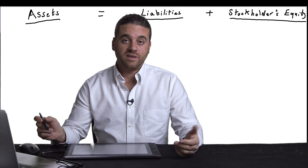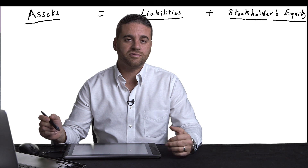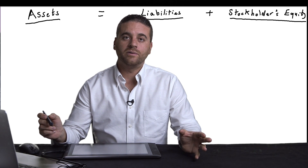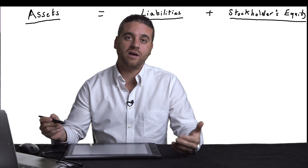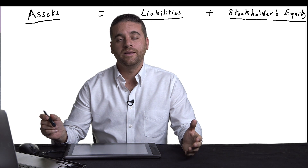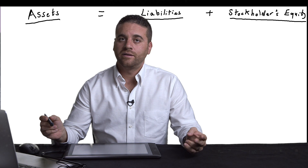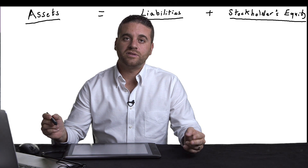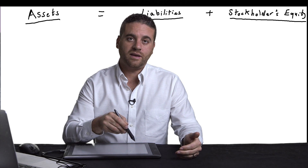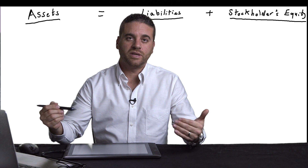Let's say the company just started the business — they just registered, have their own place, and they're going to raise cash by issuing stocks. That will be the first transaction to record. Always think: what are the two accounts that I need? Then remind yourself where each account is classified under the accounting equation, and decide if you're going to increase or decrease that account.